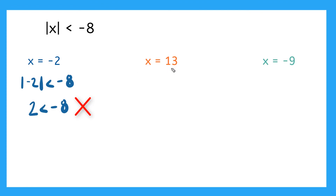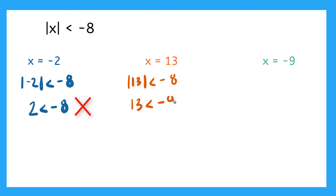Let's test our next one. It says x is equal to positive 13. What happens if we plug that in? The absolute value of 13 — is that less than negative 8? The absolute value of 13 is still a distance of 13 from zero. Is that less than negative 8? No, this positive number is definitely bigger than this negative number.